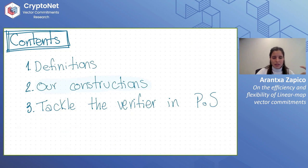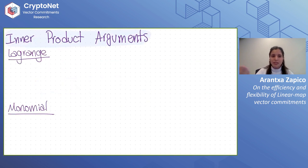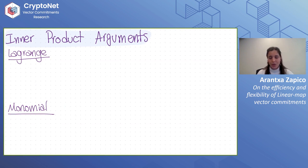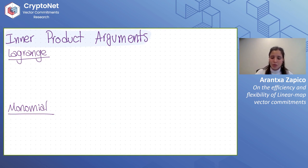Now our constructions. We want to start from the simplest linear map — N equals 1, inner product. We have two constructions: one using Lagrange polynomials as commitment key, and one using the monomial basis. For the Lagrange-basis construction, we start with a set of roots of unity — this is important, it cannot be an arbitrary set. We commit to our vector using lambda_i's, the Lagrange interpolation polynomials, and to the function using the same.